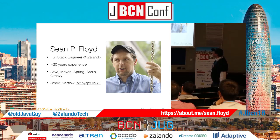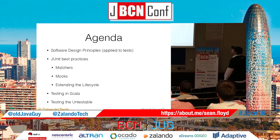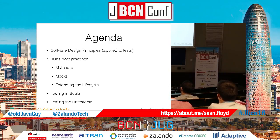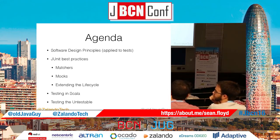I have experience in several languages, mostly in Java, but a bit in Scala also, and I'm on Stack Overflow. This is what I plan to talk about: software design principles and how they apply to tests, specifically JUnit best practices — using matchers, mocking, extending the JUnit lifecycle — and at some point we'll look at Scala testing. And finally, there's the crazy part, which I call testing the untestable — situations where people would immediately say "I can't test this," but we'll try to test it anyway.